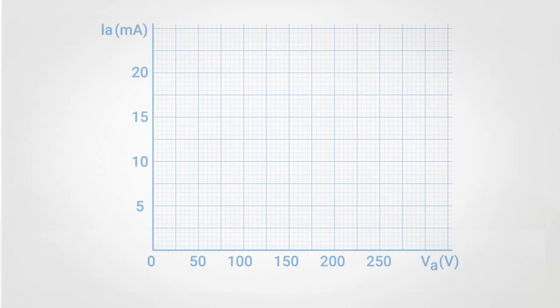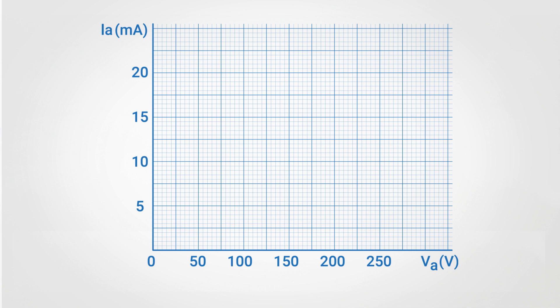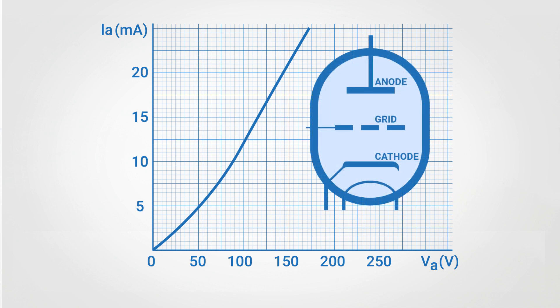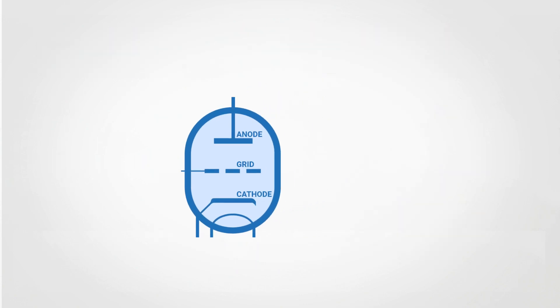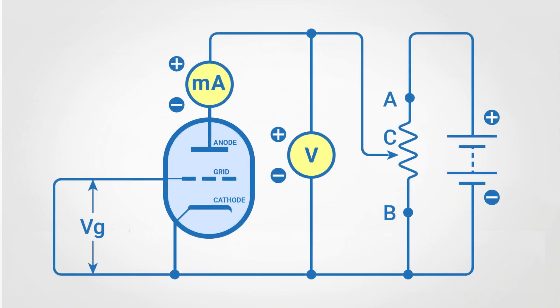We can observe how the grid is able to vary the current flow by drawing the characteristic curves of the tube. Now, we are going to apply different voltage values between the anode and cathode to find out the corresponding current. The applied voltage is called anode voltage, while the current flowing through the tube is called anode current. To perform the measurements, we will use this circuit. As we can see here, the grid and the cathode are connected so they have the same voltage.